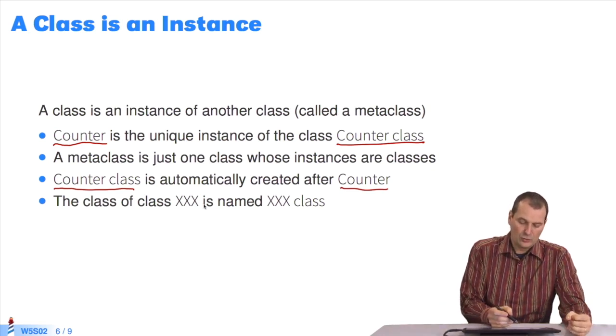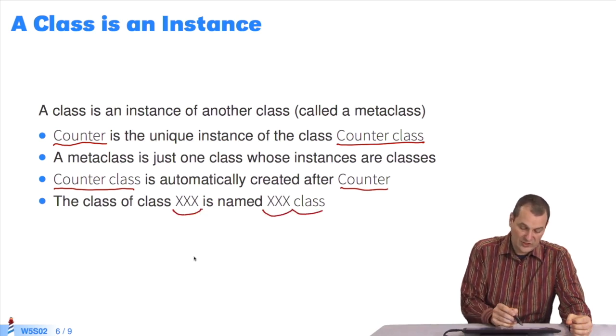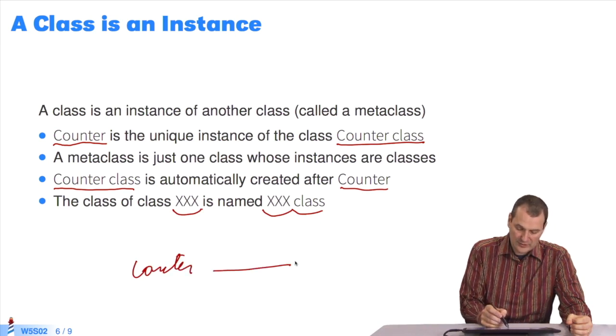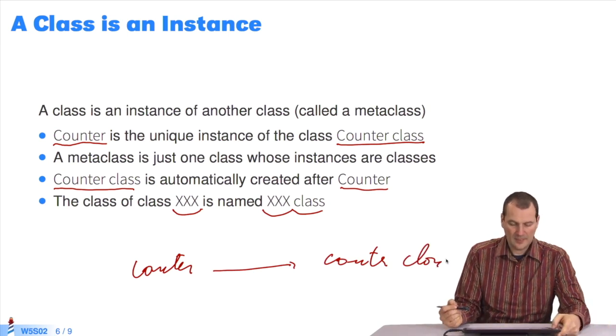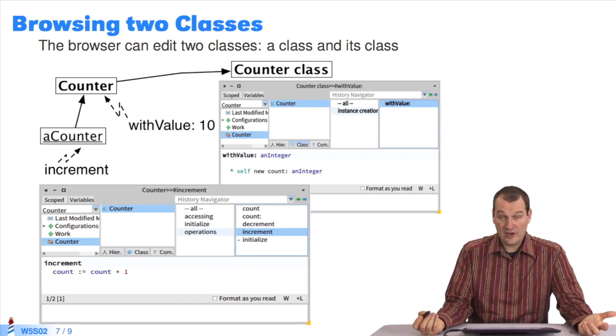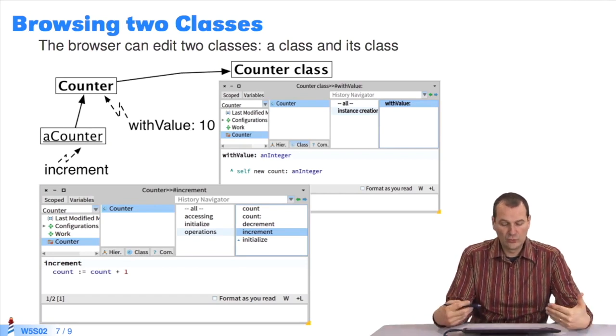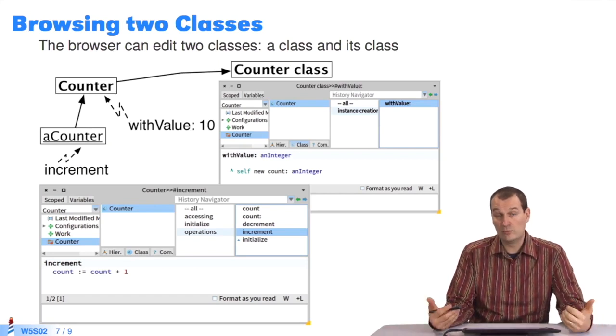What you have to know in Pharo is that all the classes in a class called XXX are called XXX class. So if I have counter, the counter class will be counter class systematically. So, in fact, what you do in reality, we're just showing you how it works. We needn't have explained it,